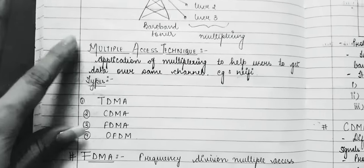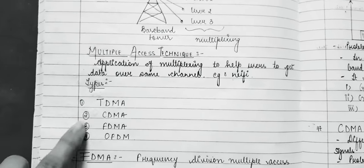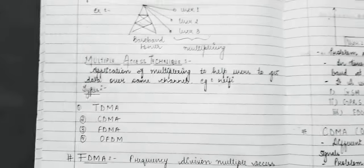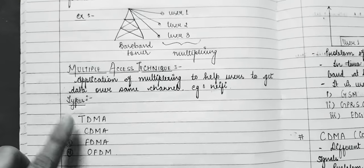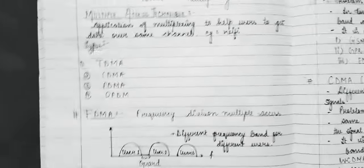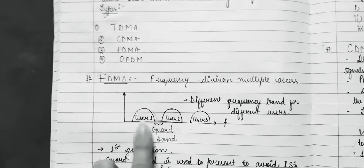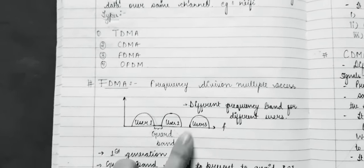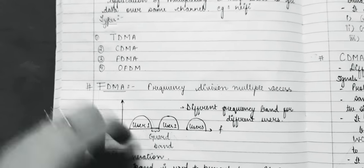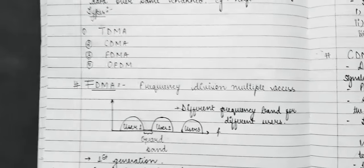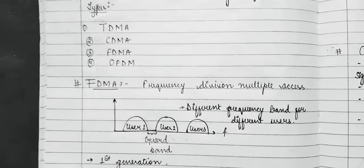To summarize: we discussed multiple access techniques — FDMA, TDMA, CDMA, and OFDM. FDMA is the 1st generation technique, TDMA is the 2nd generation, CDMA is the 3rd generation, and OFDM is the 4th generation. In FDMA, different frequency bands are allotted to different users. The gap between the frequency bands of user 1 and user 2 is known as the guard band, which is used to avoid ISI — inter-symbol interference.